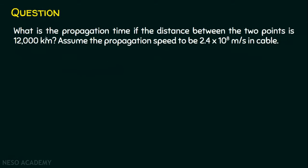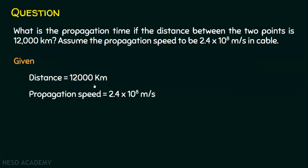Here is the question: What is the propagation time if the distance between two points is 12,000 kilometers? Assume the propagation speed to be 2.4 × 10⁸ meters per second in cable. The distance given is 12,000 kilometers, the propagation speed is 2.4 × 10⁸ meters per second, and we are intended to find the propagation time, which is also called propagation delay.